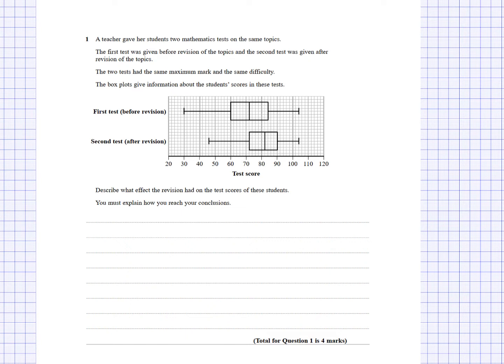There's one other thing we can do: we can talk about the skew. So the three things are: the average, which is the median; a measure of spread, which is either the interquartile range or the range; and the skew. Finally, I'm going to make a conclusion, and there are actually two conclusions we can make here, and either one will give us that last mark.